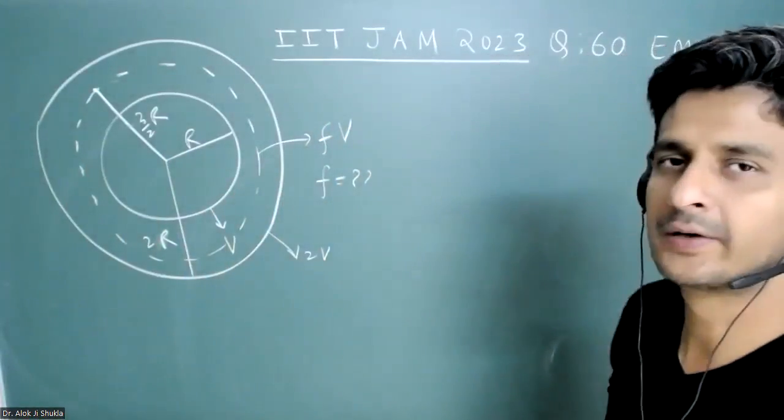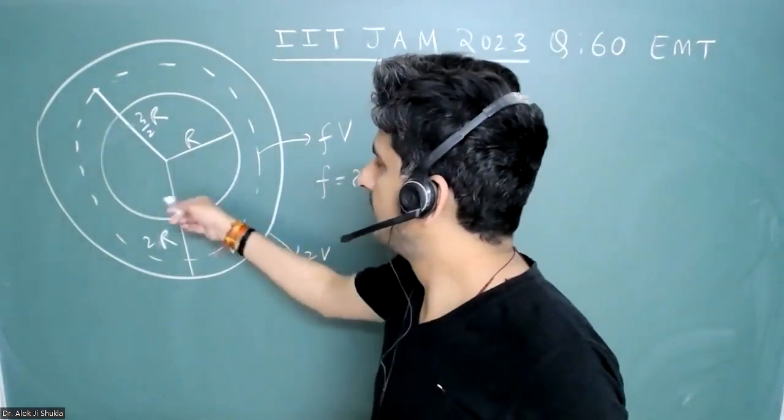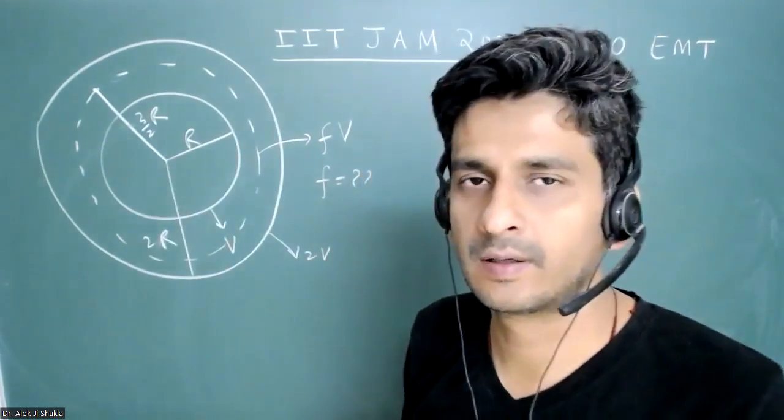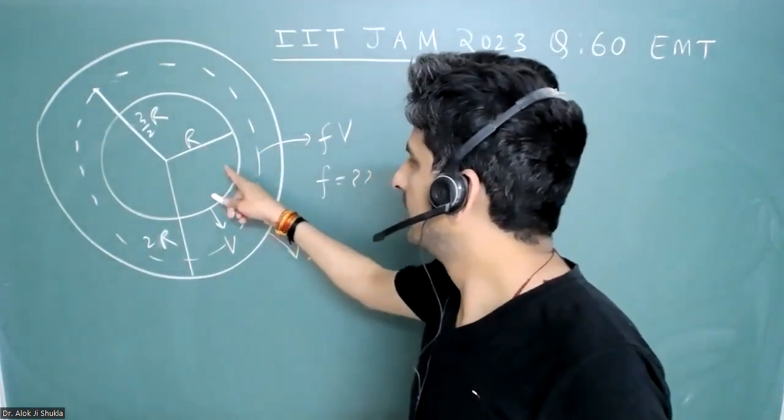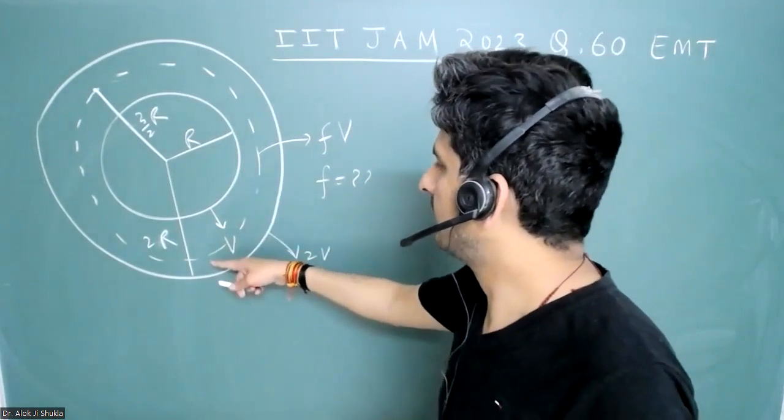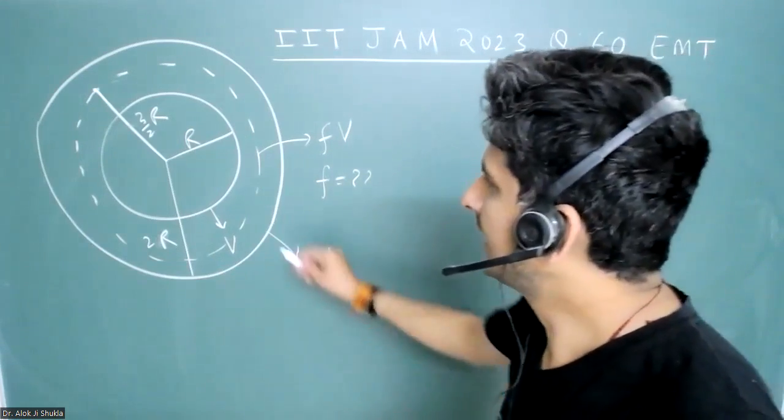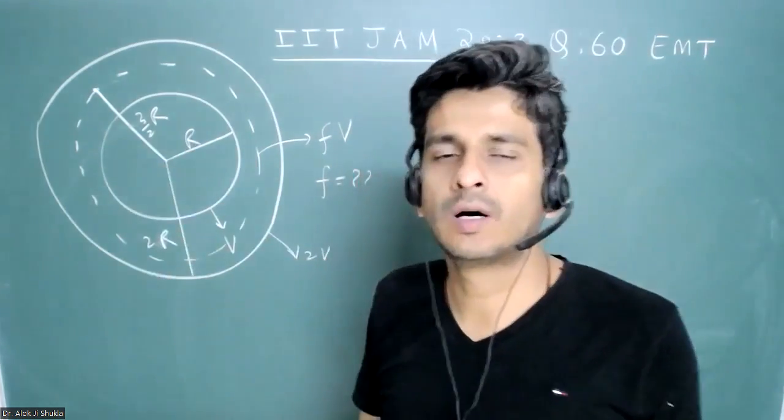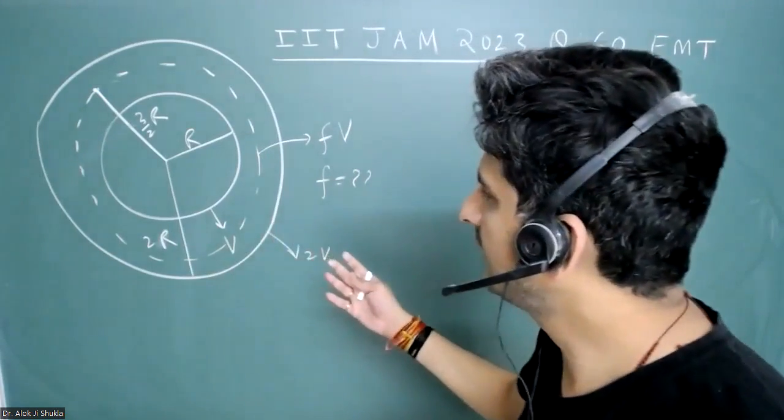This is a question from electromagnetic theory. Here a conducting sphere shell of radius r is held at potential v, and when this radius becomes 2r it is 2v. At a distance 3/2r what is the potential they have asked. You can clearly see that...